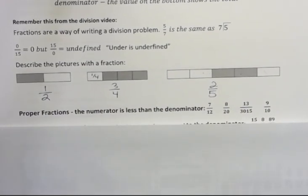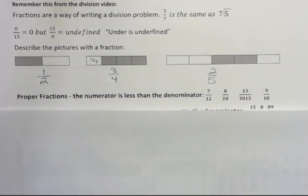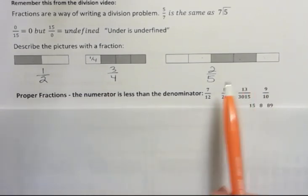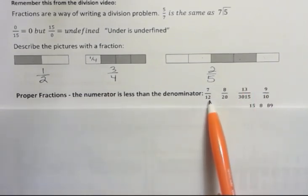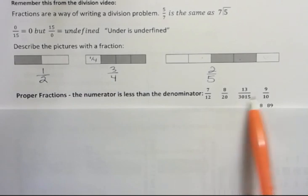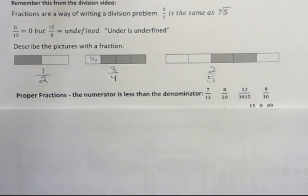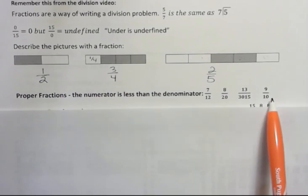Okay, a couple of definitions and vocabulary for you. Proper fractions are fractions where the numerator is less than the denominator. Notice the 7 is less than 12, 8 is less than 20, 13 definitely less than 3,015, 9 less than 10. That's what we kind of like to have the most or feel comfortable with proper fractions. Those definitely are naming something that's less than a whole or less than one.